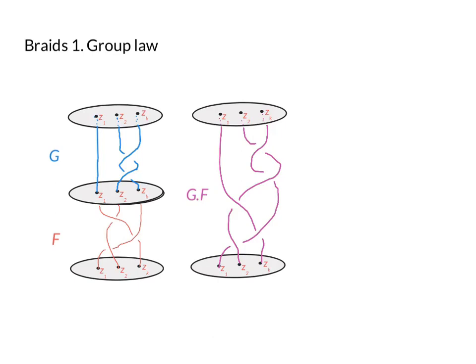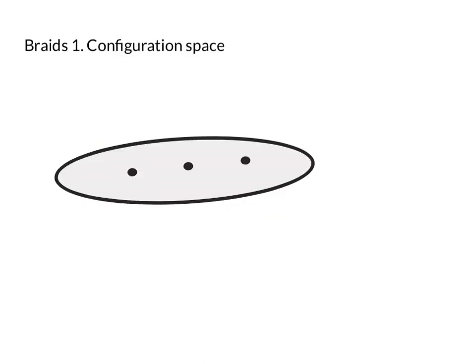So in fact, the braid group, the group of equivalence classes of braids under this group law, is the fundamental group of a certain space. So the space in question is called configuration space, and you should think of it like this: a braid is a path in the configuration space of points in the plane.